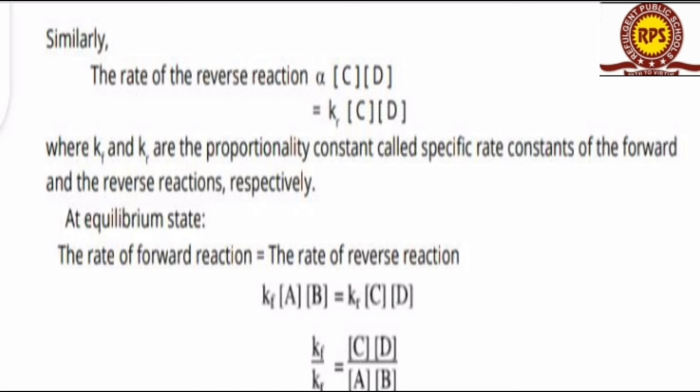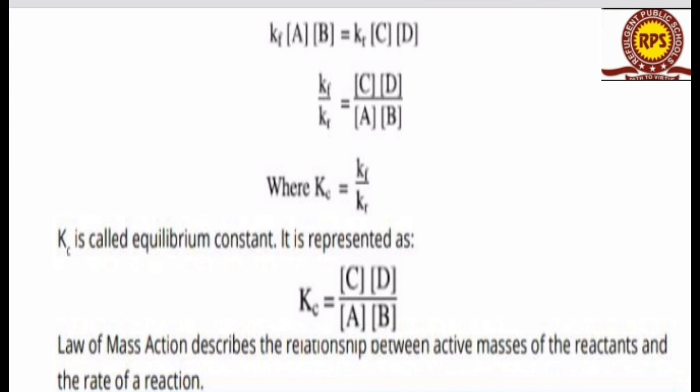Now if we write this in equation form: KR divided by KF equals [C][D] divided by [A][B]. When we write it in this form, KC means the equilibrium constant, and it is represented as KC, which equals the rate of forward reaction divided by the rate of reverse reaction. So KC equals KF divided by KR.